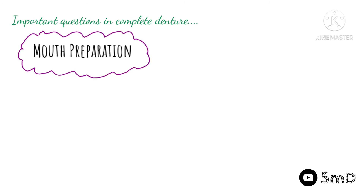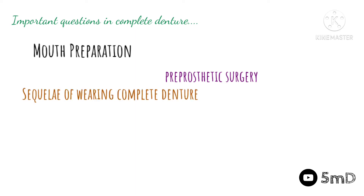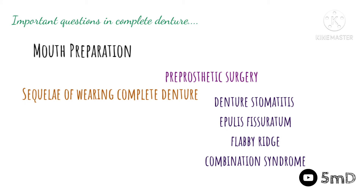Moving on to the next chapter, mouth preparation can be asked as a ten-mark question on the whole, and three prosthetic surgeries in particular can be asked as five-mark questions. We also need to know about the sequelae of wearing a complete denture for a longer time — what could be the consequences. There could be denture stomatitis, denture irritation hyperplasia (commonly known as epulis fissuratum), sometimes a flabby ridge, and as a consequence, combination syndrome — we already have a separate video on combination syndrome.